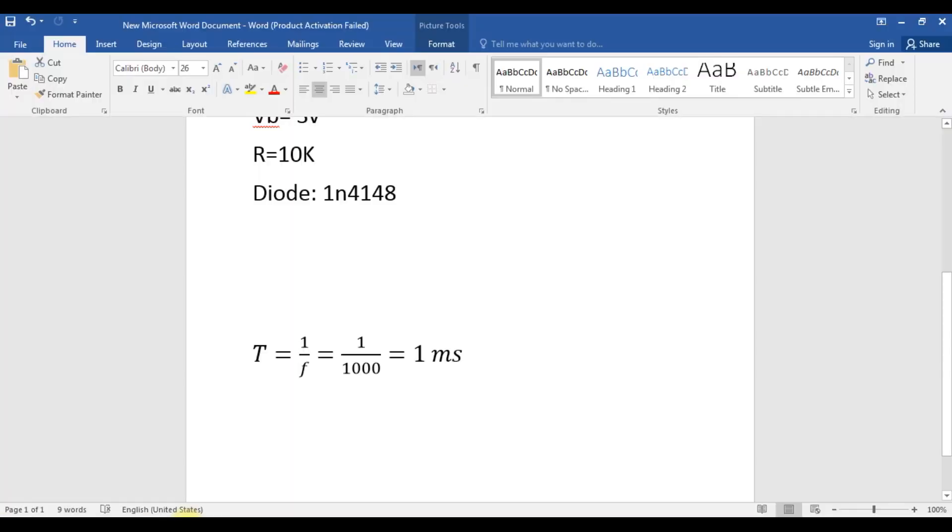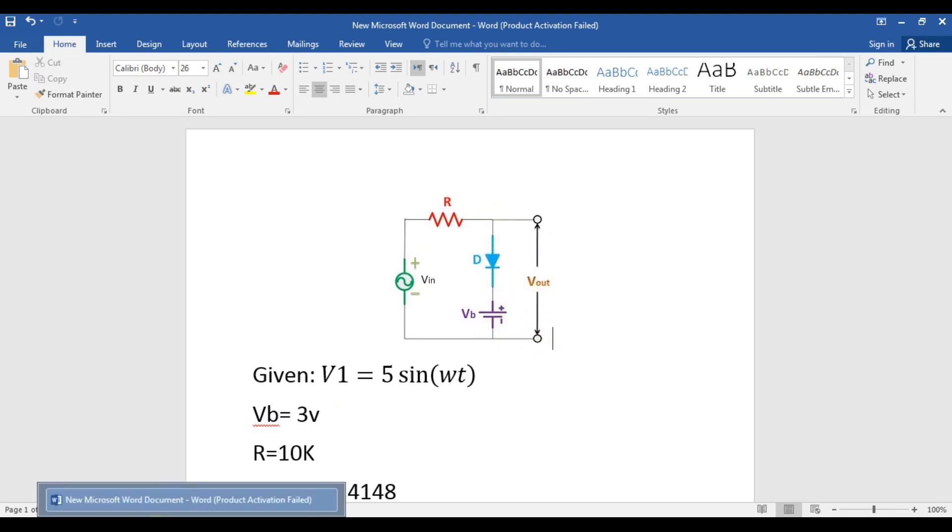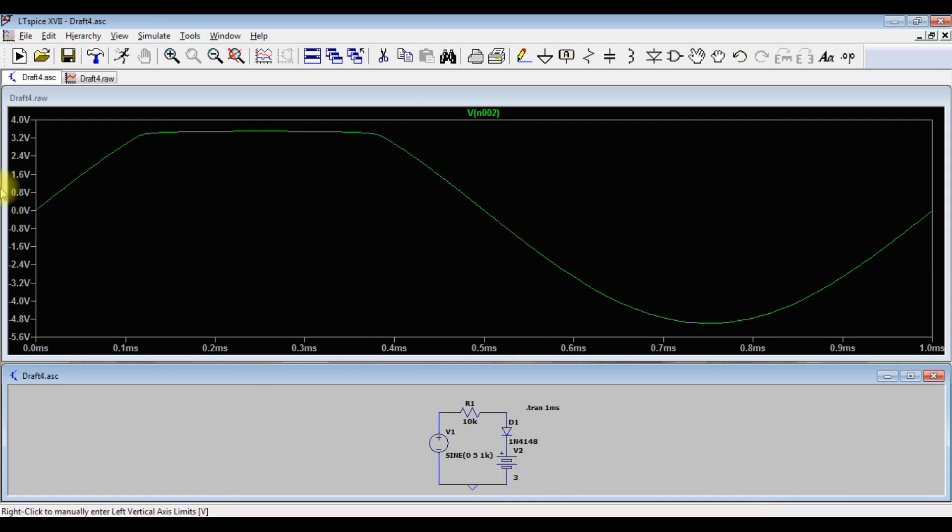So as seen here, the Vout is between the anode and the ground, so we need to measure the voltage across this node. Press on the first node and hold, then add another probe.